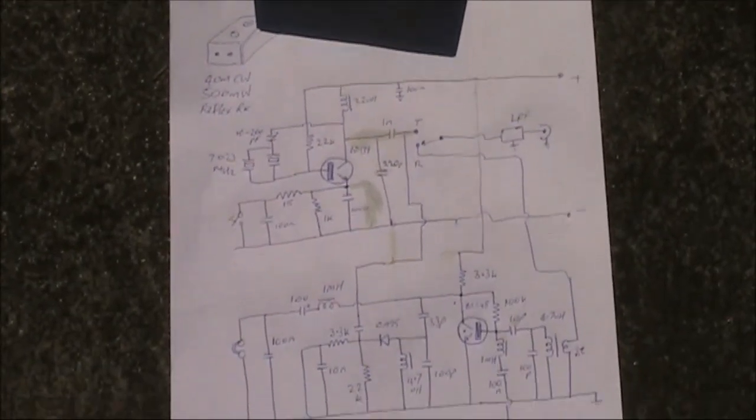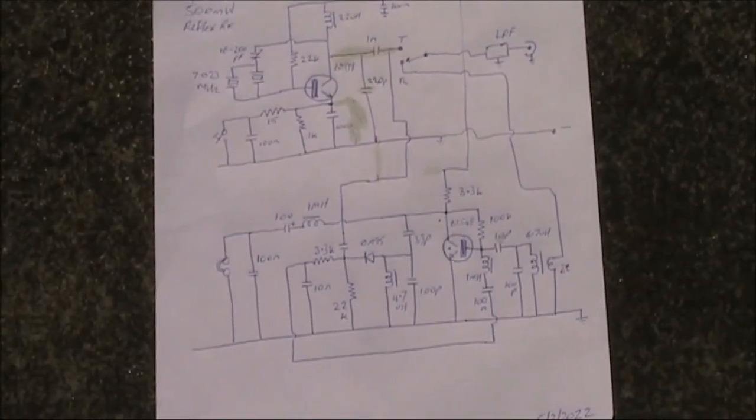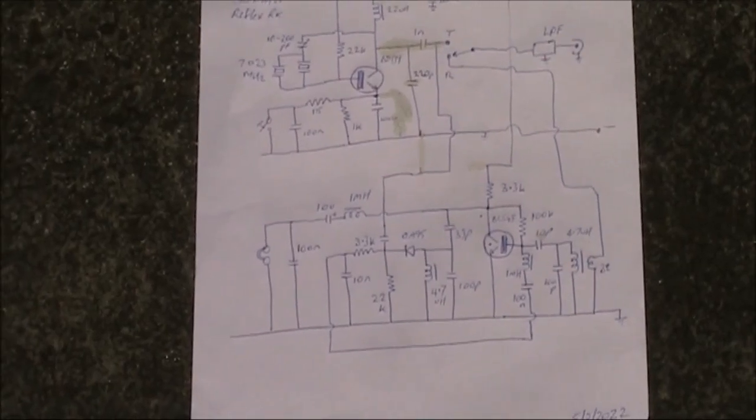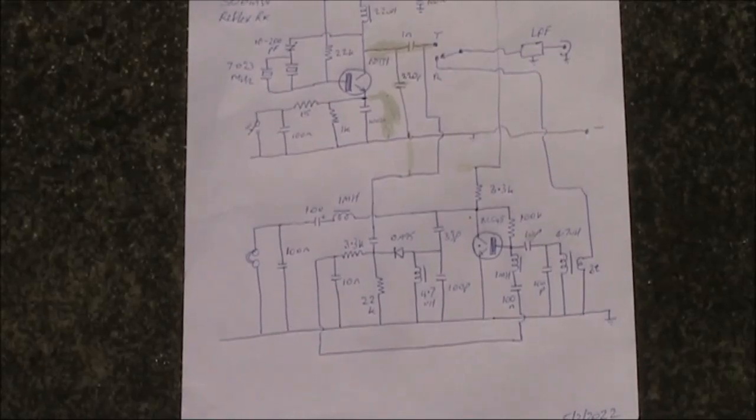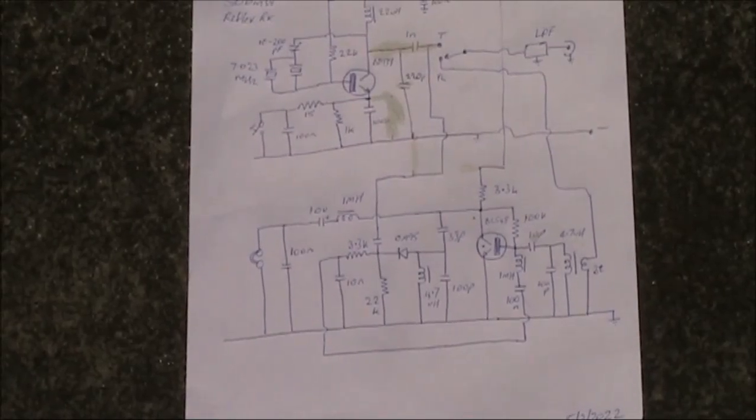But unlike some really simple transceivers, it does have two tuned circuits at 7 MHz. And that can help remove breakthrough from AM broadcast stations, if there's any strong stations near you.